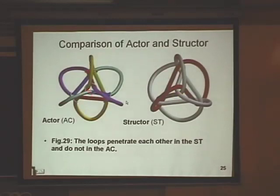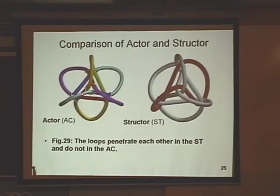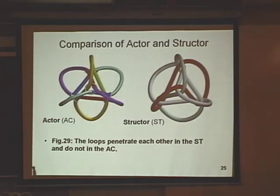Here's a comparison of an energy form — a boson — and a structure form — a fermion. Notice that all that's involved is that the circuits of the twisting penetrate each other in one, whereas in the other they do not. If I cut that little piece there, this one flies apart, but this one will not fly apart — so this one we can say now has a rest state.